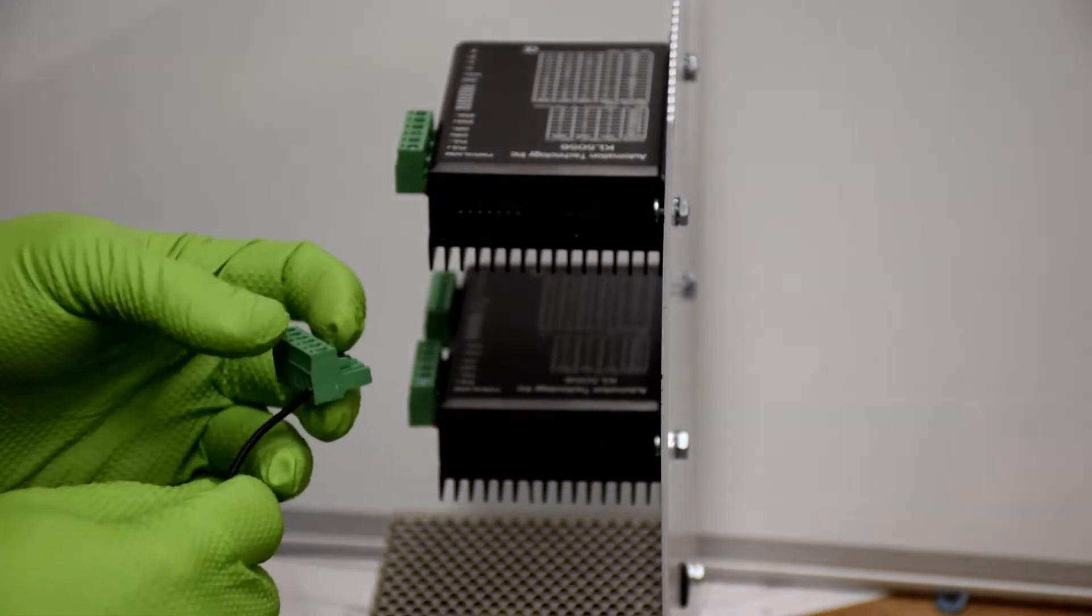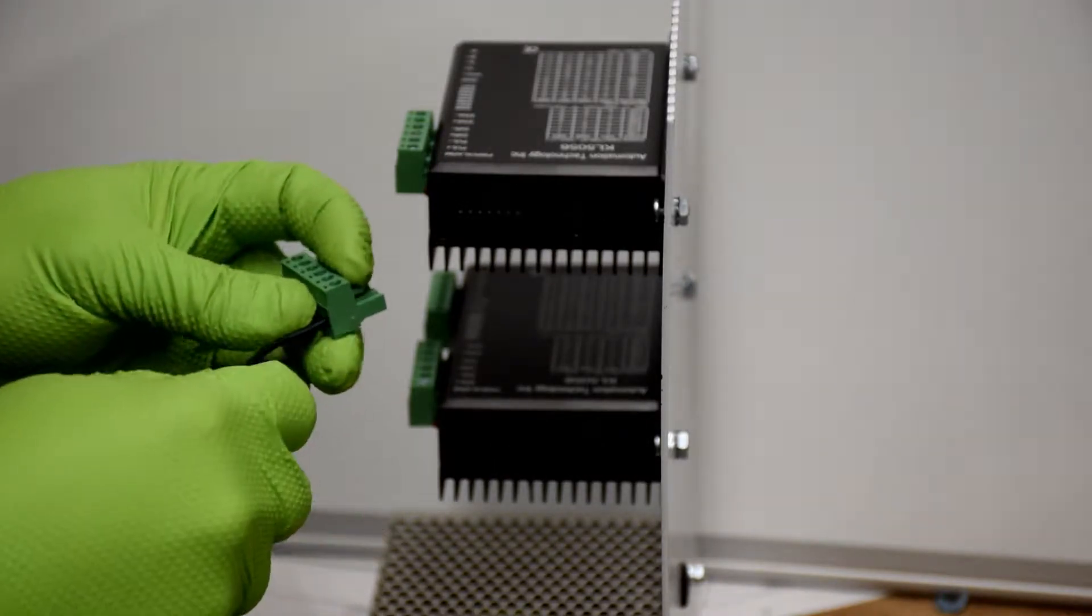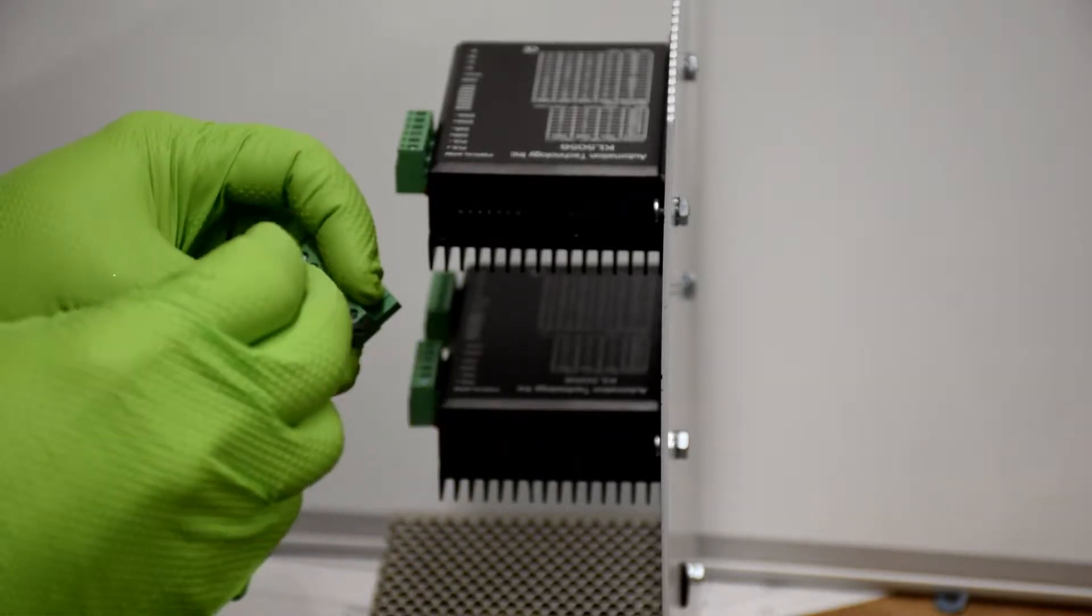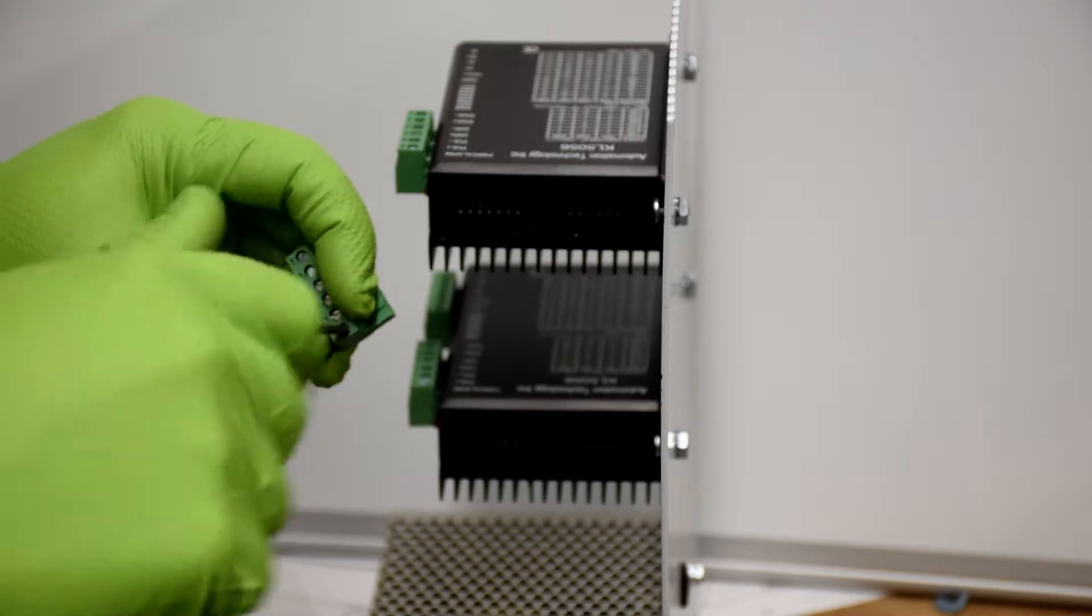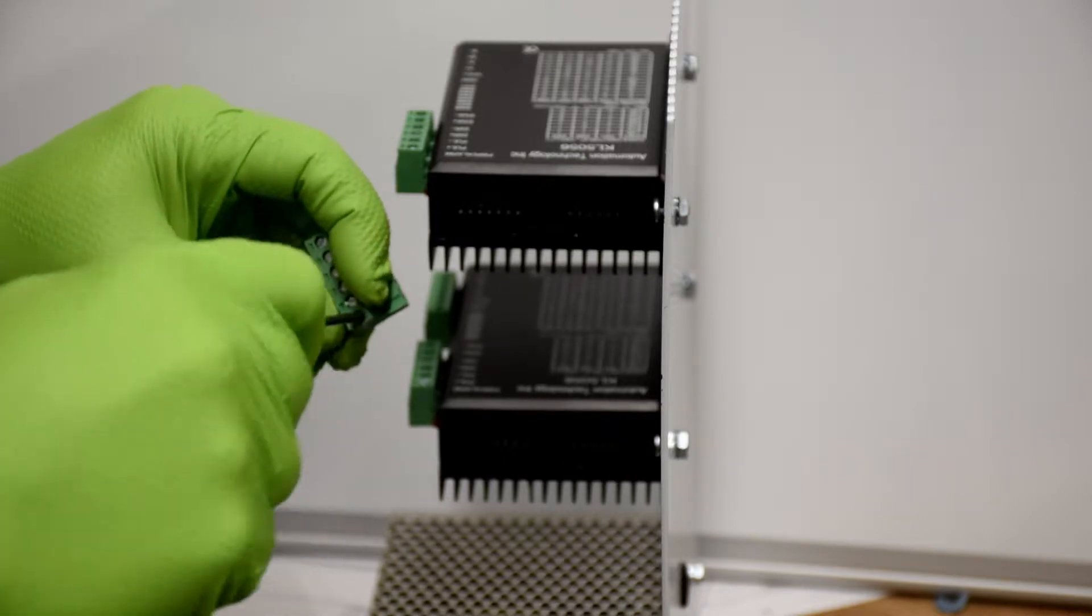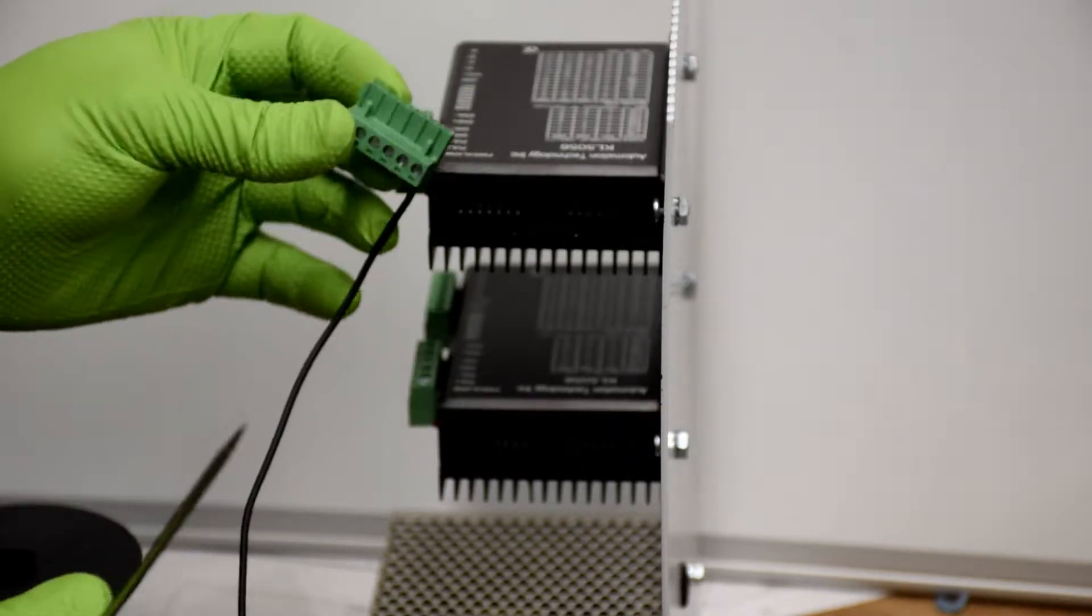Insert the black wire into the ground terminal. Tighten it down with a screwdriver, and then give it a little tug just to make sure it's in there and it's not going anywhere.